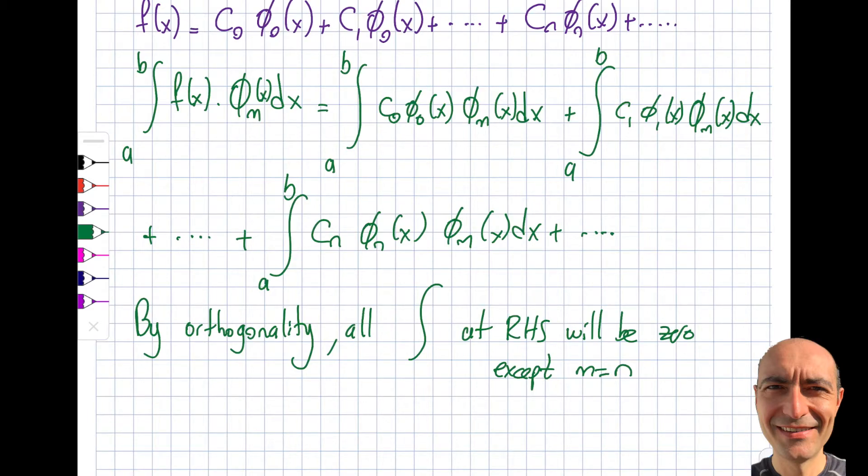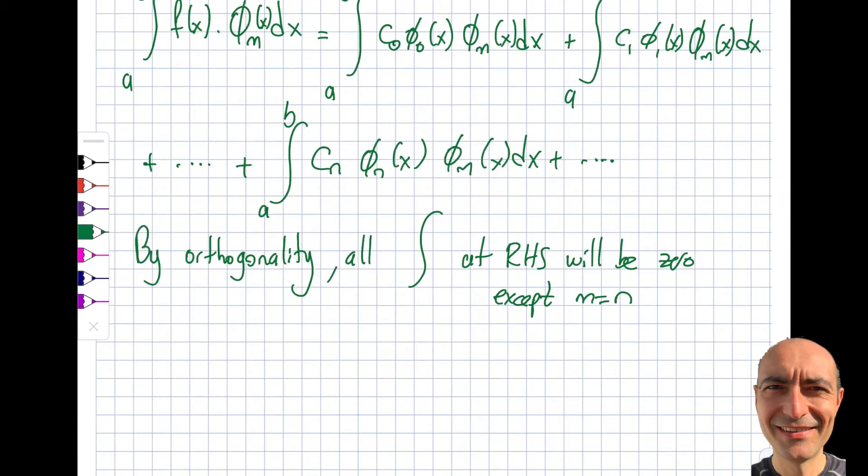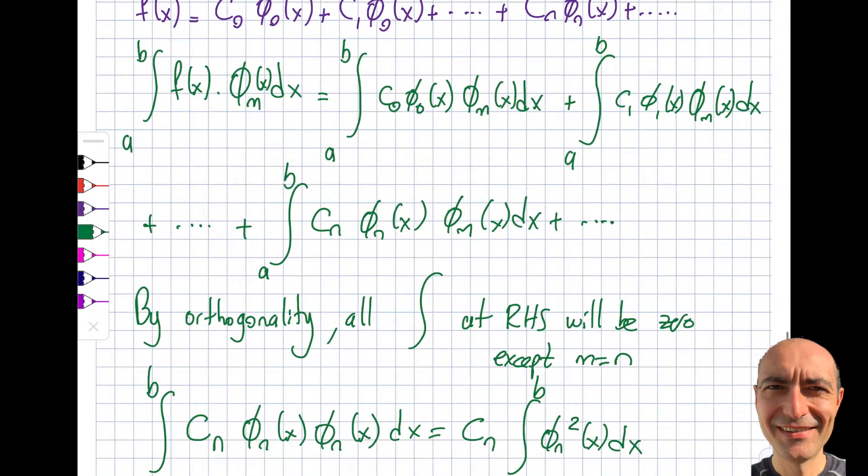So basically, let's write this this way. By orthogonality, all the integrals at the right hand side will be 0 except where m is equal to n. If m is equal to n, then I will get myself this one. Well, let's actually take a look at this one then. Integral a to b, because that stays, right? So c_n. I can call n or m. I'm not differentiating those two, right? So I'm going to call this n, because that's much more convenient. phi_n(x) dx. So the cn is a constant. It's not a function of x. So I can take it out of the integral. Integral a to b, phi_n squared of x dx. So it turns out that the entire right hand side of this whole thing can be simply this term, and the left hand side is that then.